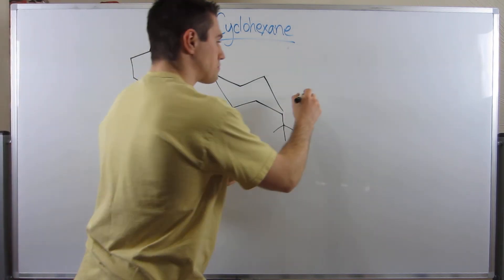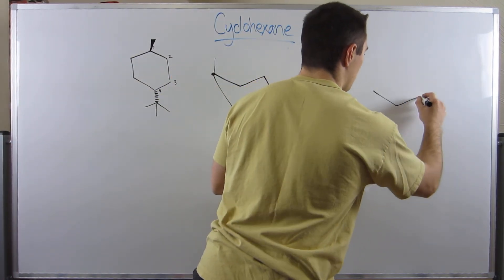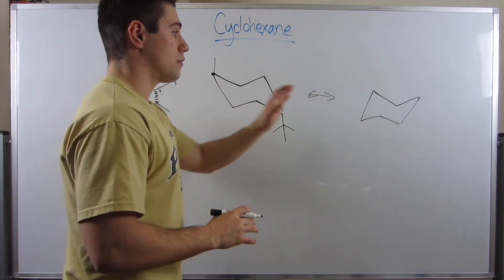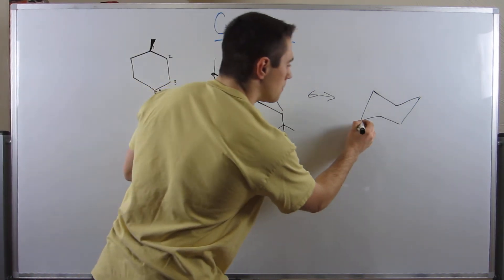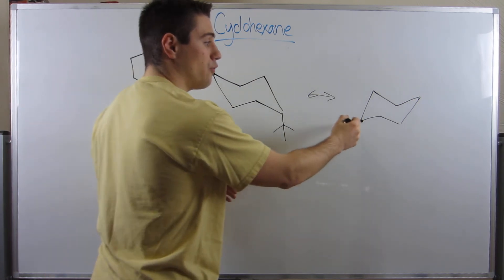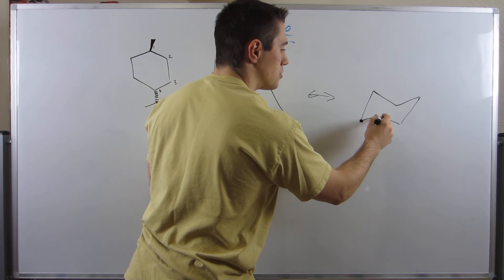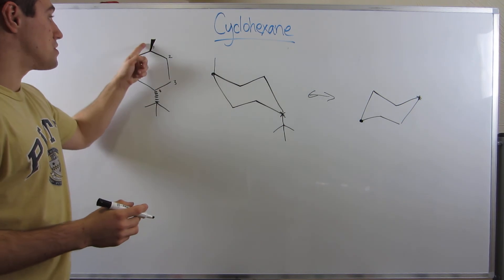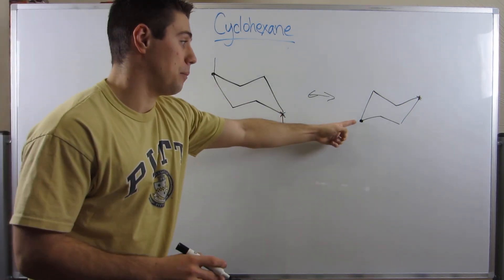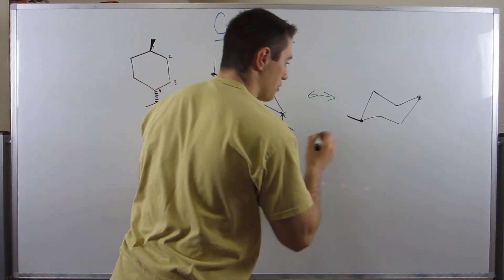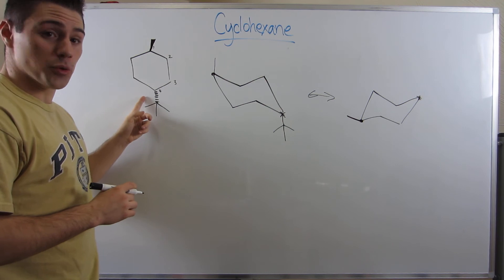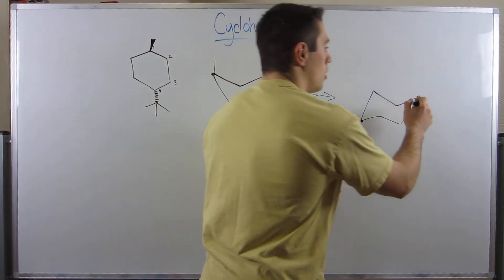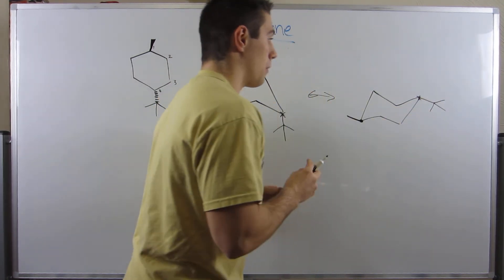Now let's flip the chair — it has to look the other way. Stay organized: make sure you have the carbons in the right positions. The dot carbon is now here; count four away for the asterisk carbon. The methyl group is still up, but now up equatorial because we went from peak to valley. The t-butyl group is still down — but now down equatorial as well.